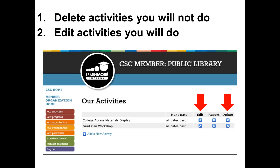Then they come up to a list of their activities. There are three tasks we want them to do. First, they're going to delete activities they will not do in the coming year — they go to the right column, click the delete button, get a message asking 'Do you really want to delete this?' They say yes, and it's gone.